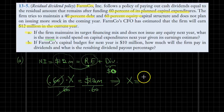The maximum amount that the firm can invest in capital expenditures would be 20 million dollars.